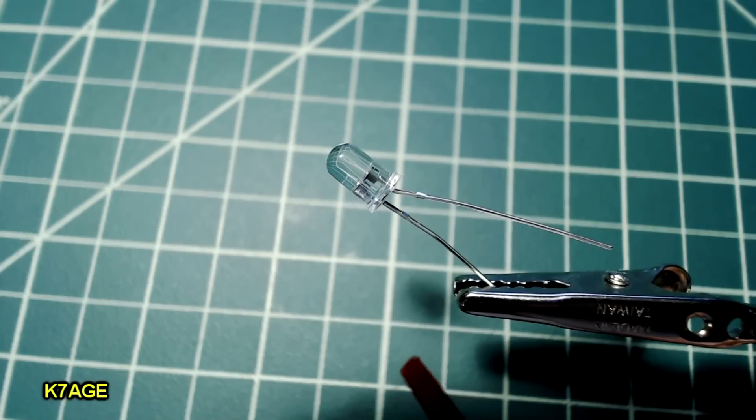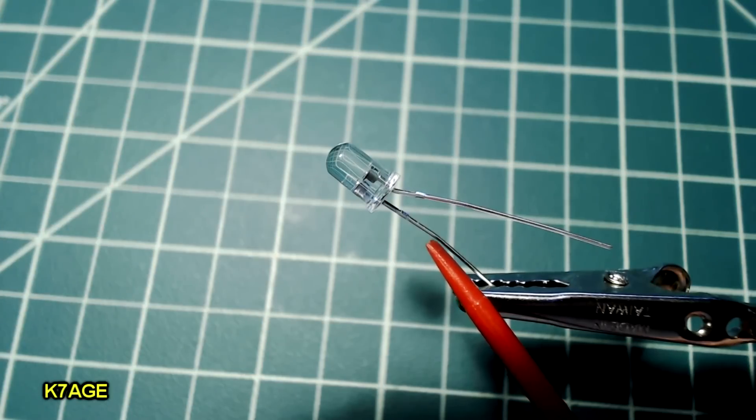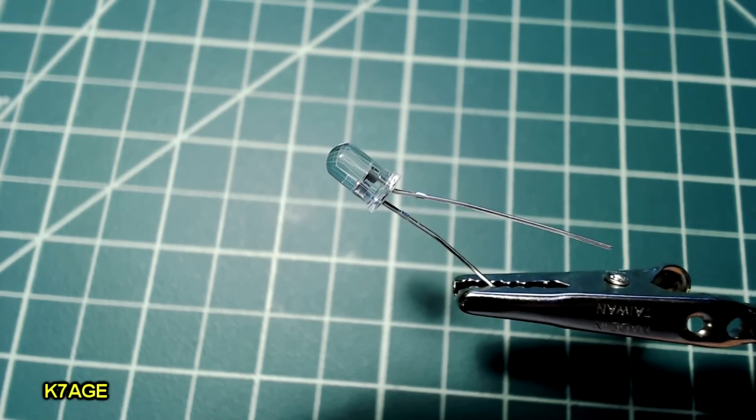So I'm going to use this LED for the polarity tester. It's a very special LED in that it has two LEDs inside the case. There's a red and a green. So when you apply voltage in one direction, it'll light up green. You apply the voltage in the other direction, it'll light up red. This will give us a go-no-go polarity tester.